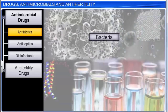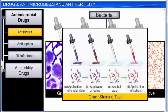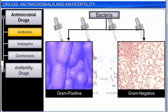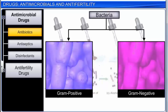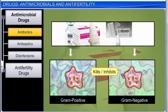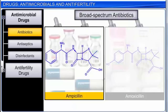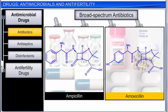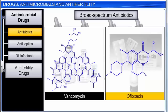Bacteria are grouped as gram-positive and gram-negative on the basis of the Gram staining test. Bacteria that stain purple are termed gram-positive, and those that stain pink are gram-negative. Antibiotics that kill or inhibit a wide range of both gram-positive and gram-negative bacteria are called broad-spectrum antibiotics. Ampicillin, amoxicillin, chloramphenicol, vancomycin, and ofloxacin are some such broad-spectrum antibiotics.